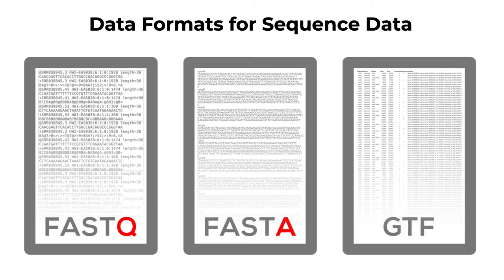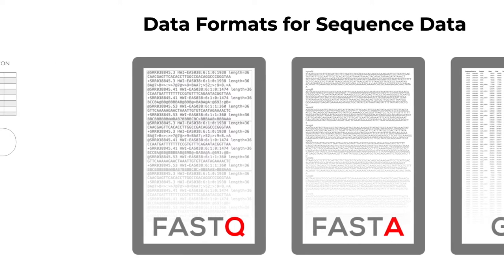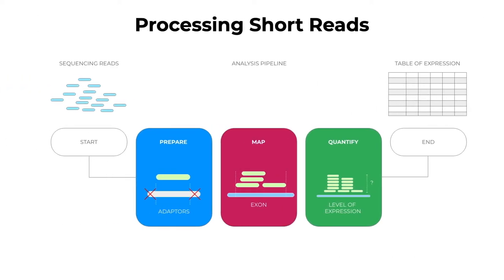For next-generation sequencing data analysis, what we need to know is how data from the sequencer becomes digitized. We talked about different formats like FASTQ, FASTA, and GTF that are critical for processing the data and turning it into a structured table of expression. The basic idea is to process short reads that need to be cleaned up from technical variation, mapped onto the reference genome or transcriptome, and then quantified by counting the level of expression and assigning a number to each element placed into the table of expression.